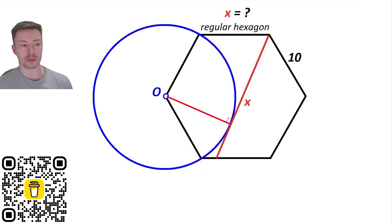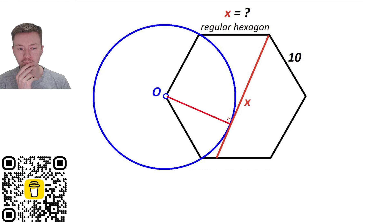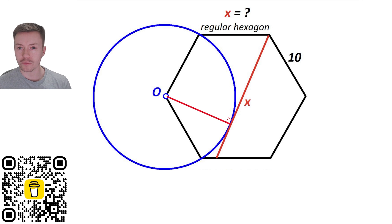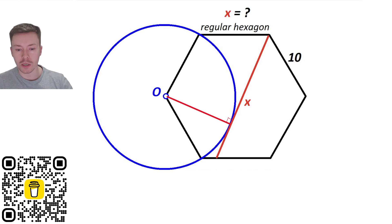The first thing I would do with this problem is put some additional lines on it. The first line I'd think to draw uses circle theorems — a radius meets a tangent to the circle at 90 degrees. So my first thought is to put that line on, because that has to be useful — there must be some useful reason that it's a tangent we can use in our solution.